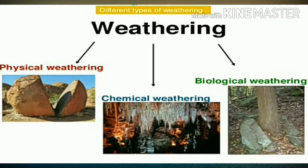There are different types of weathering. Mechanical, also known as physical weathering; the second type is chemical weathering; and the third type is biological weathering. In arid climates, mechanical weathering is dominant, whereas in humid climates, chemical weathering is more effective. Biological weathering, the third type, occurs because of the work of living organisms like trees or different types of small animals or creatures.